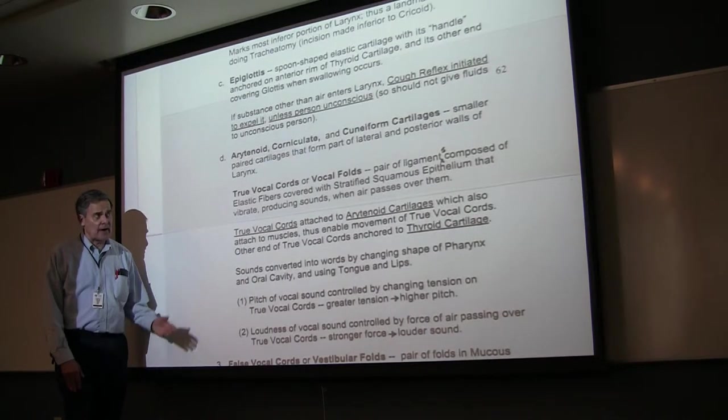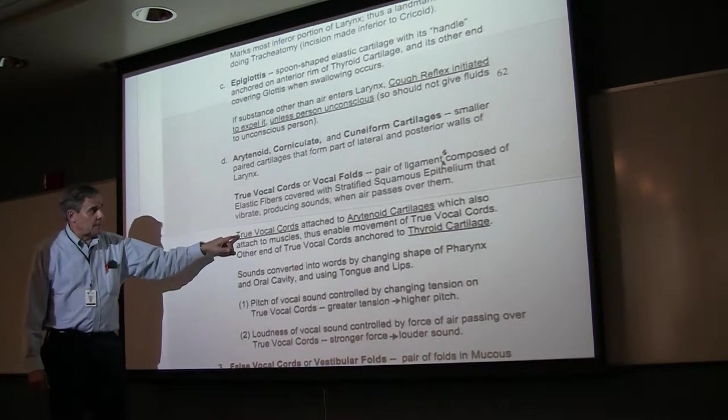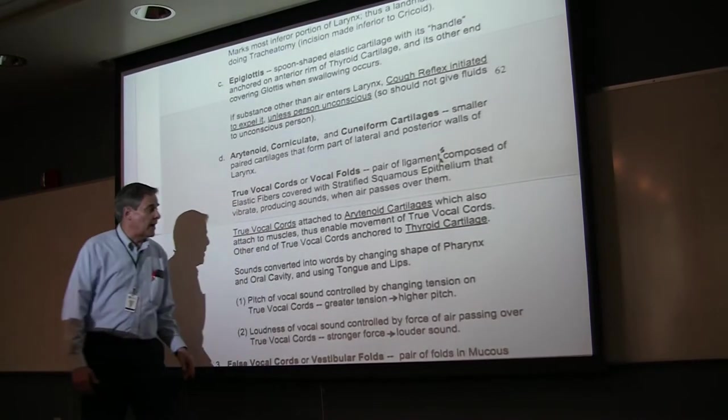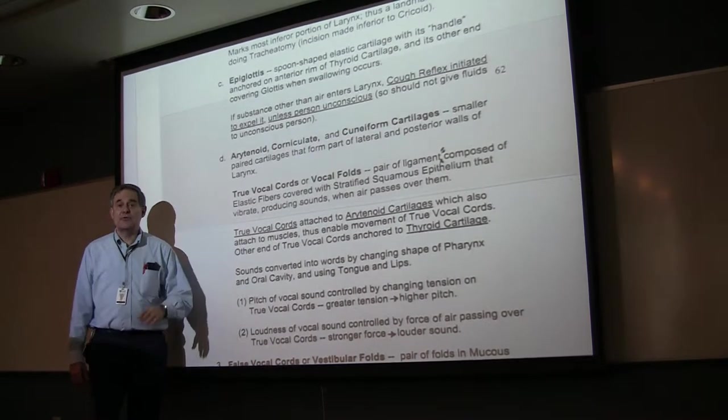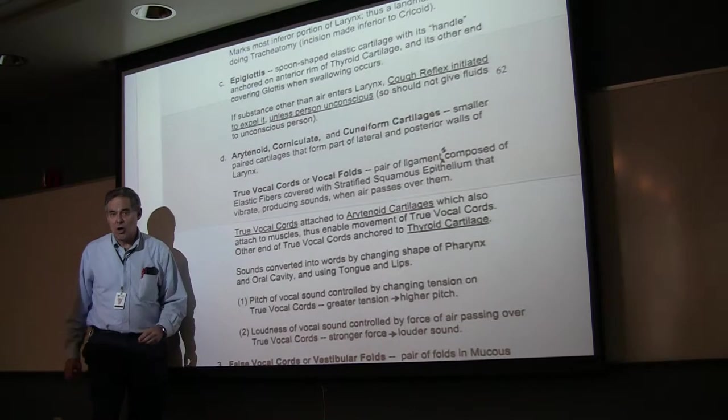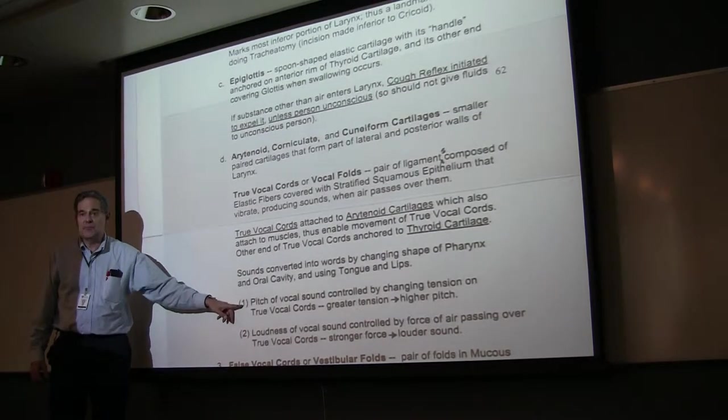Notice they're covered with stratified squamous epithelium. The true vocal cords are attached to the arytenoid cartilages at one end and the thyroid cartilage at the other. There are muscles that move these, and that's what changes the stretch or tension on the cords. This is what allows us to change the pitch of our voice.